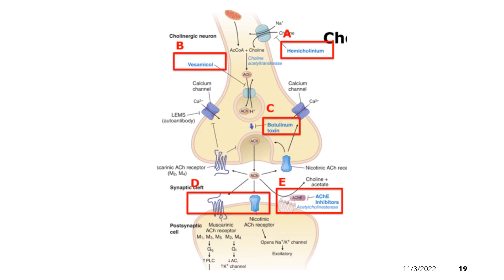These are the drugs that interfere with cholinergic neurotransmission. Letter A is hemicholinium, which inhibits choline uptake by blocking the sodium-dependent choline transporter. In the axon terminal, choline transporters function to bring choline from outside to inside the cell to participate in the formation of acetylcholine. Hemicholinium inhibits this transporter in order to block the transport of choline into the cell, thereby inhibiting the formation of acetylcholine.